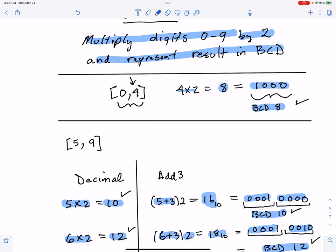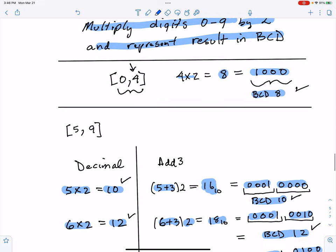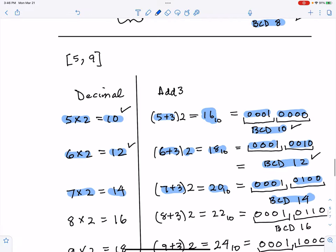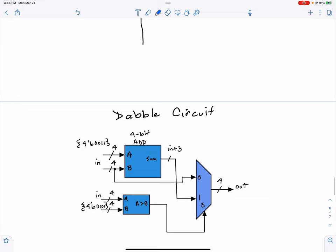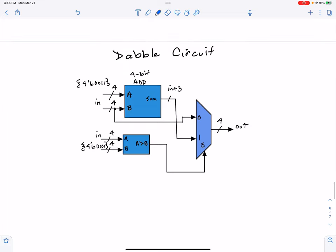For the first four digits, 0 through 4, we don't have to do the add 3 trick. For things 5 through 9, we do have to do the add 3 trick. So next I want you to think about that in terms of a circuit.